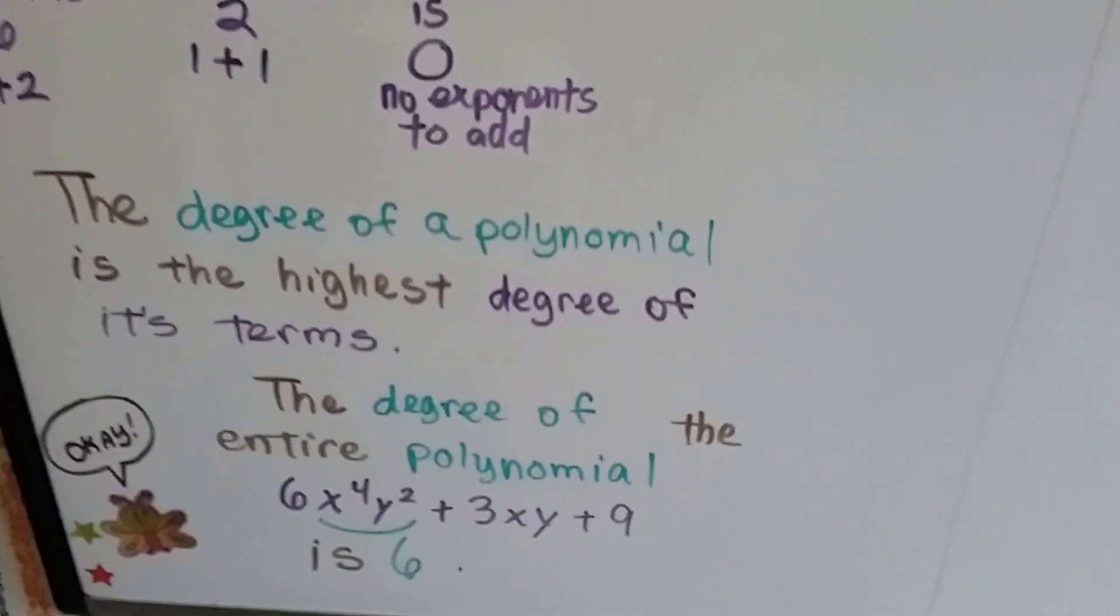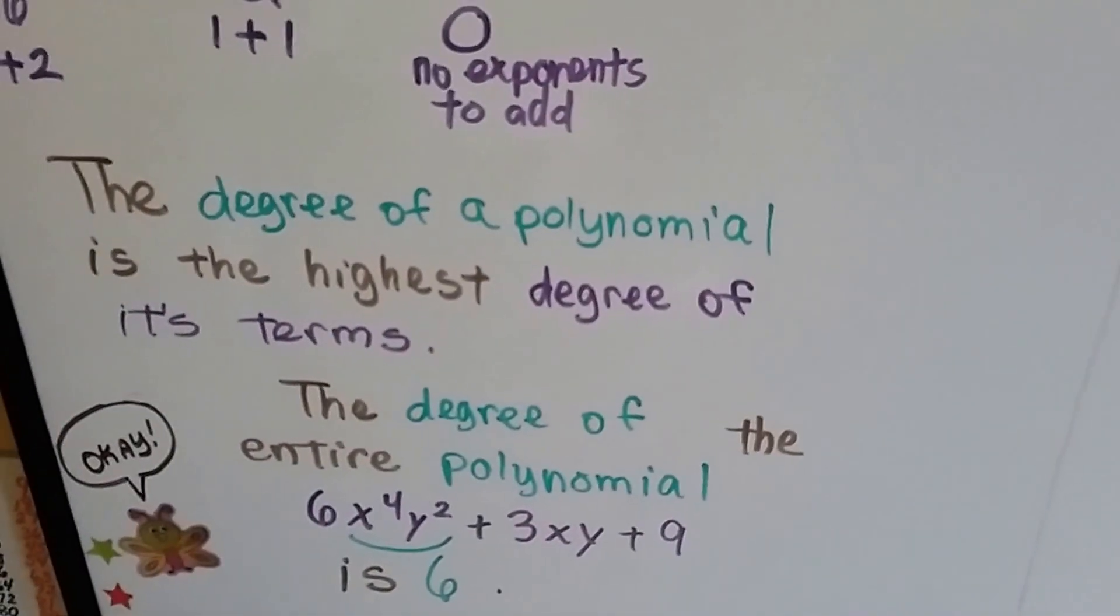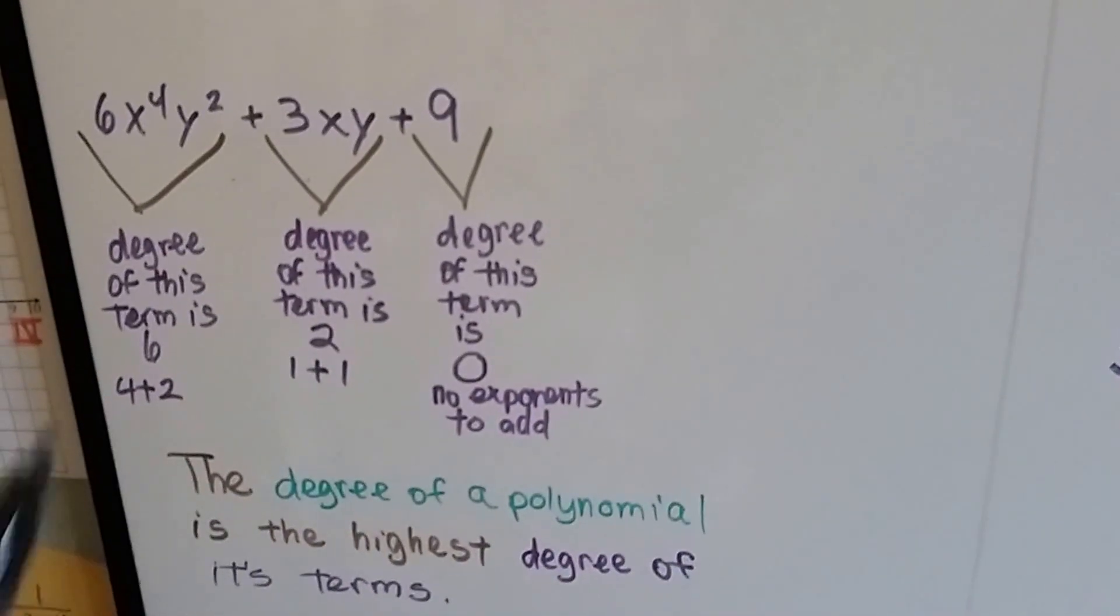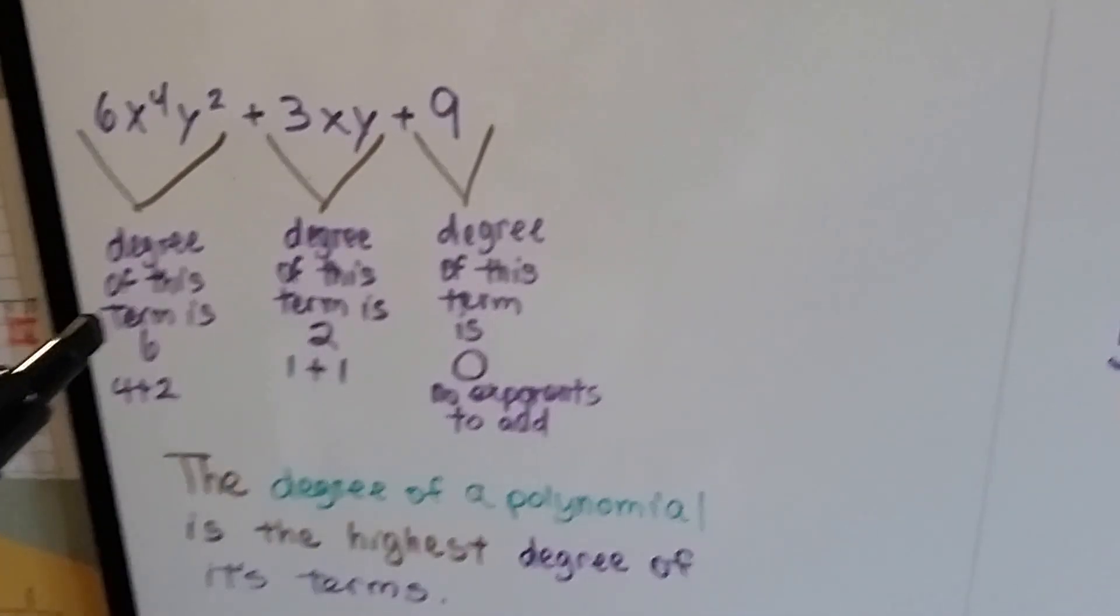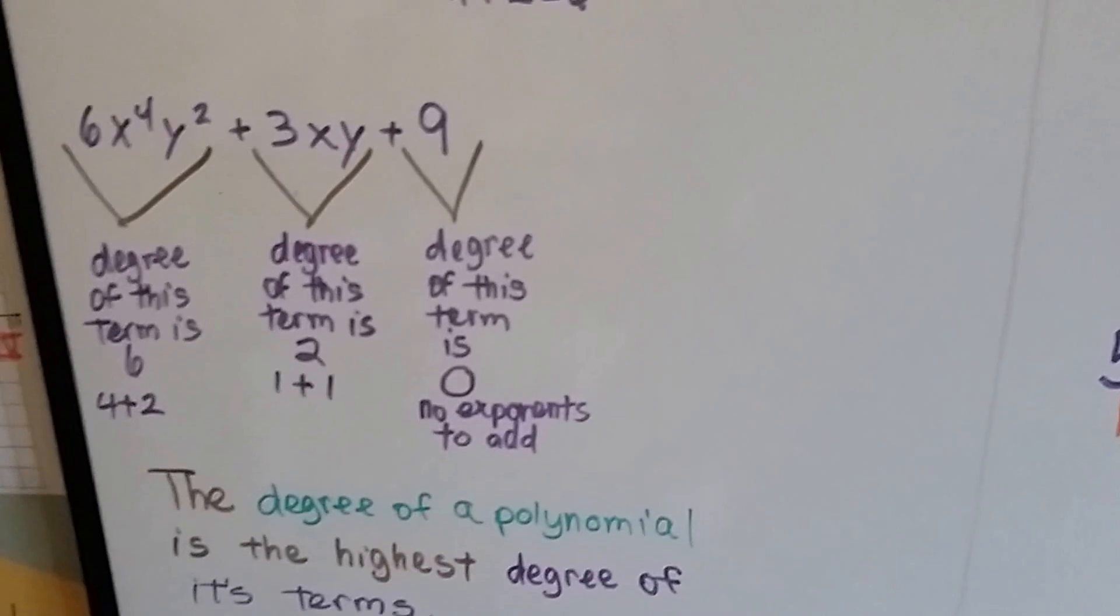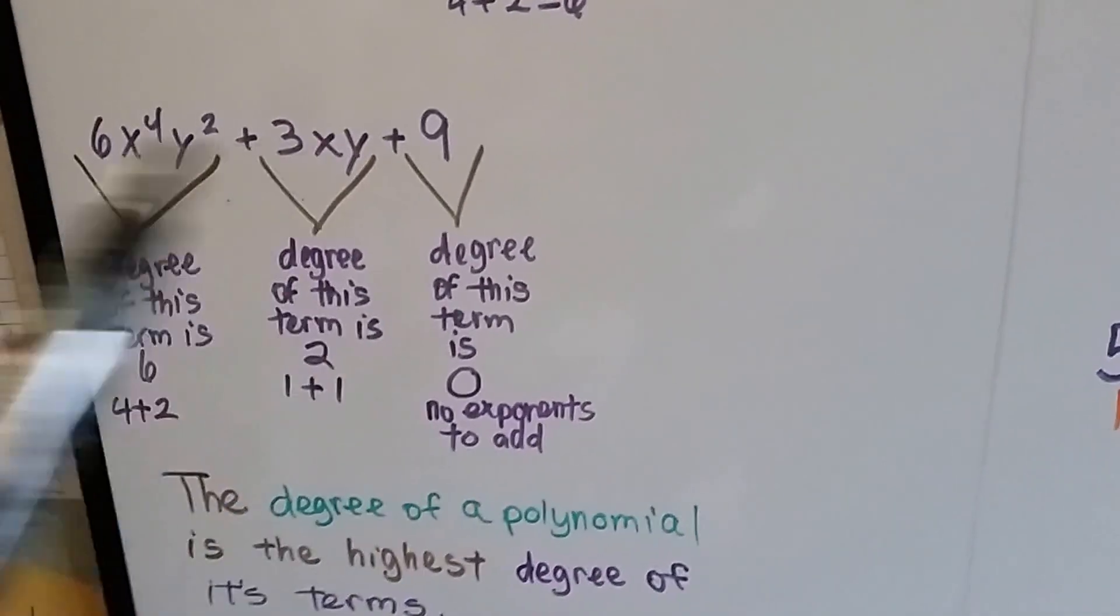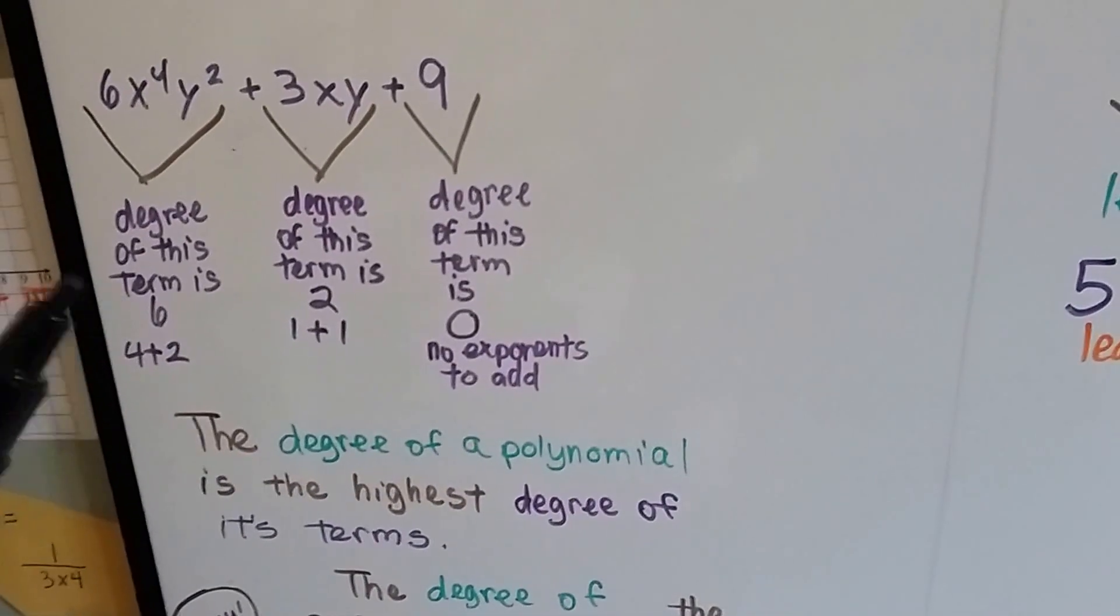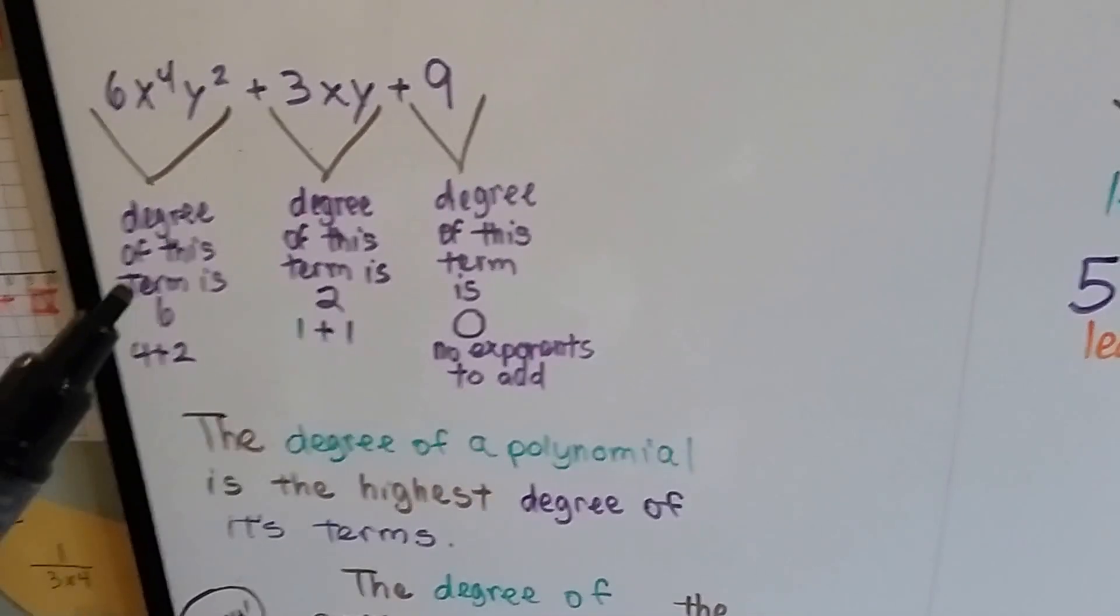The degree of a polynomial is the highest degree of its terms. So we can find a degree of the entire polynomial, we can find a degree of a term each one separately, and we can find the degree of the entire polynomial all together. It's the one that's got the highest term degree.